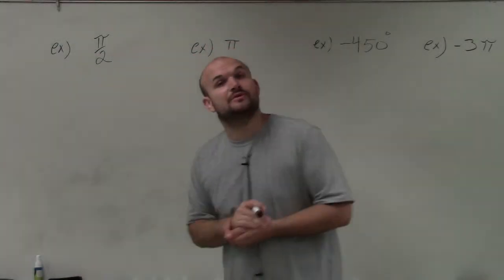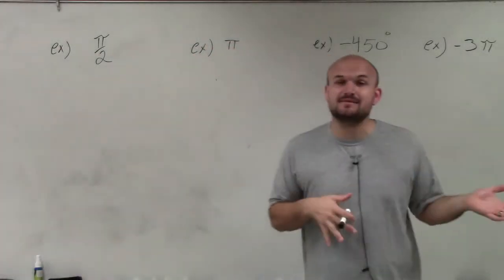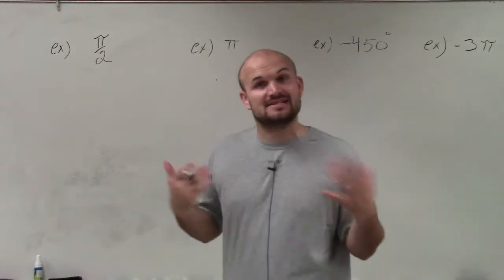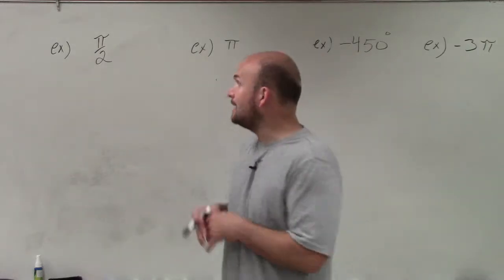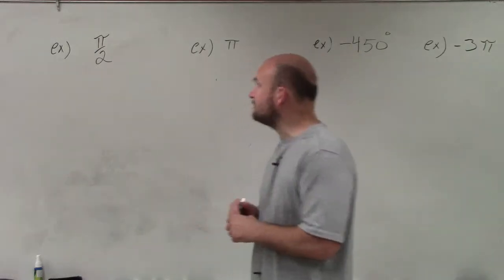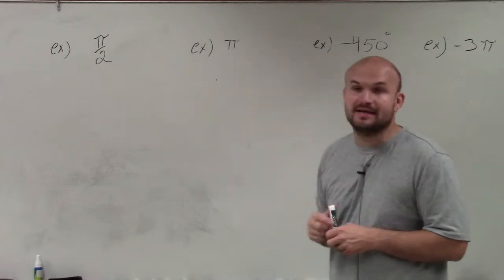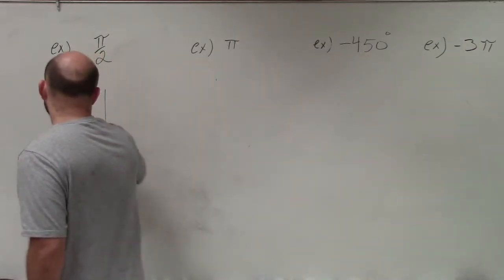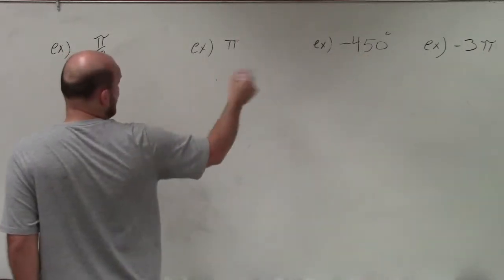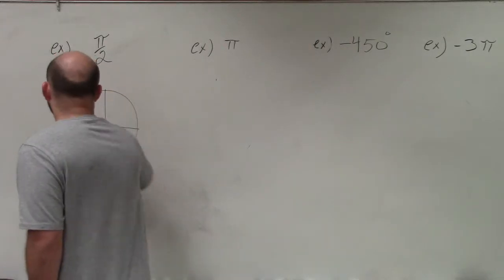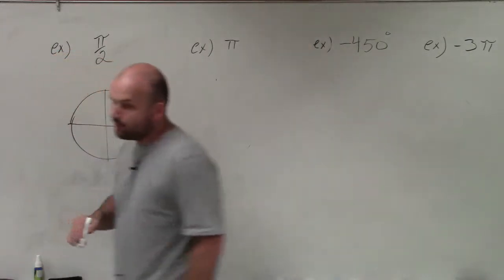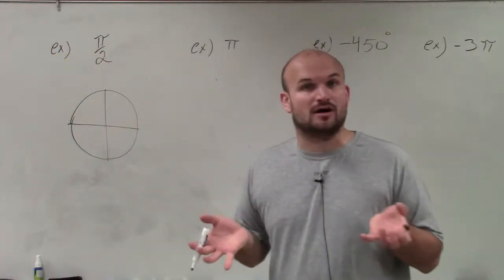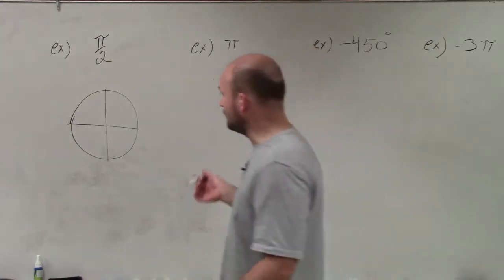Well, ladies and gentlemen, what I like to do is show you how to sketch some angles and determine if they lie on the x or on the y axis. The first angle we have here is pi halves. Now when we have angles that are in radian form, which three out of our four are going to be, it's going to be very important to kind of just get the angles out of a circle.